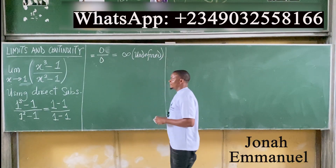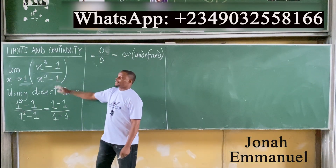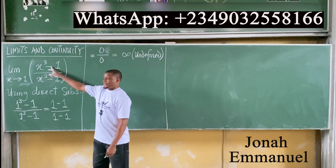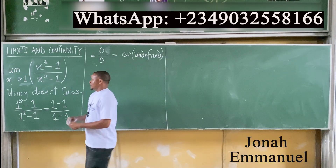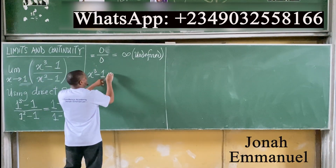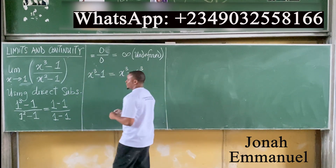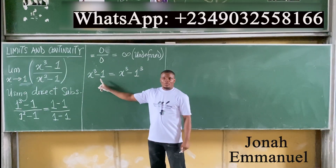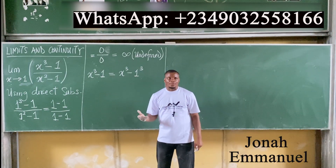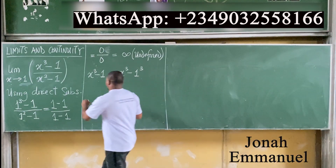That's the first step. Now looking at this from the actual sense, the numerator is a difference of two cubes question, and the denominator is a difference of two squares. I know that x cubed minus one is the same as x cubed minus one cubed, because one cubed gives you one. So this is called difference of two cubes.